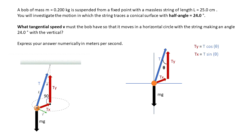We know that Ty is equal to the magnitude of the tension, that's T, multiplied by the cosine of theta. And Tx is equal to the magnitude of the tension multiplied by sine of theta. We can see this from the picture.